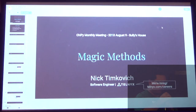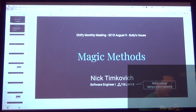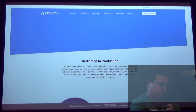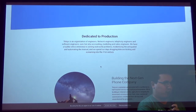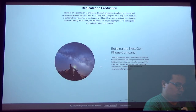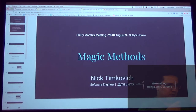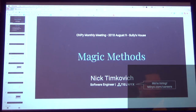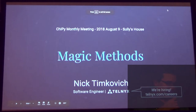I'm Nick, a Python engineer at Telnyx, and we are hiring. Telnyx is an awesome place with a ton of engineers — probably 50% of them are Python, and we're also polyglot. We're building next-gen phone stuff: voice and messaging. You can call a number and it will start talking to an HTTP server you have, so you can do programmatic things. But I'm not here to talk about voice — I'm here to talk about magic methods.